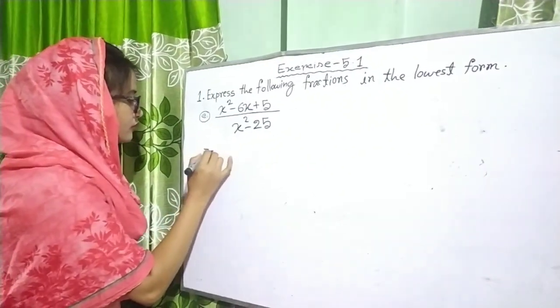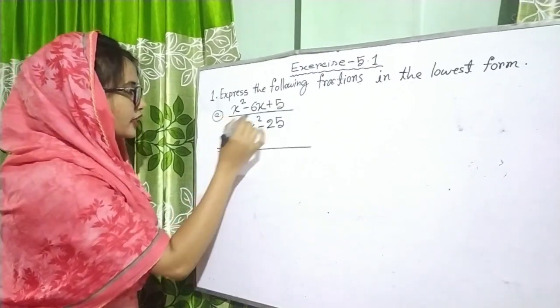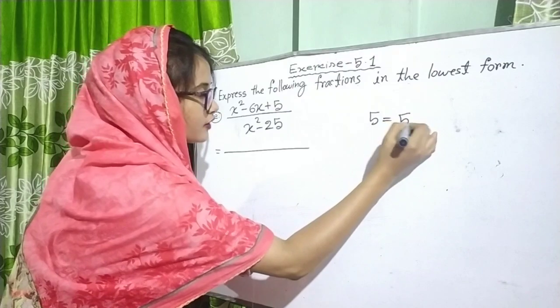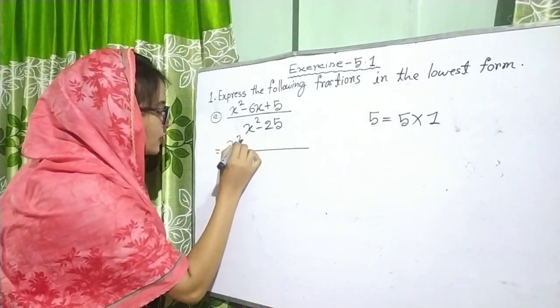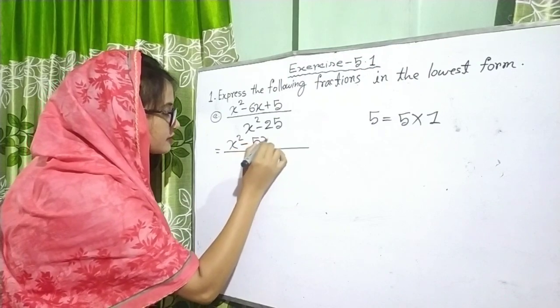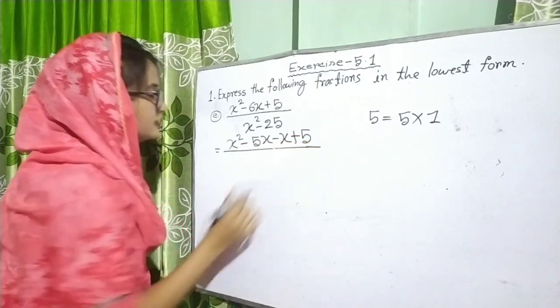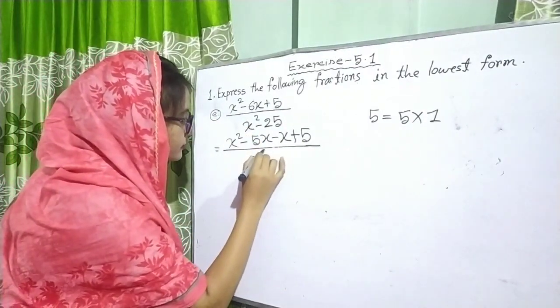Now first of all, we have to factorize the numerator and the denominator. Here 5 is a prime number, so we can write 5 equals 5 × 1. Now, x squared minus 5x minus x plus 5 divided by... here we can see if we write 25 as 5 squared, it will be a formula A squared minus B squared.